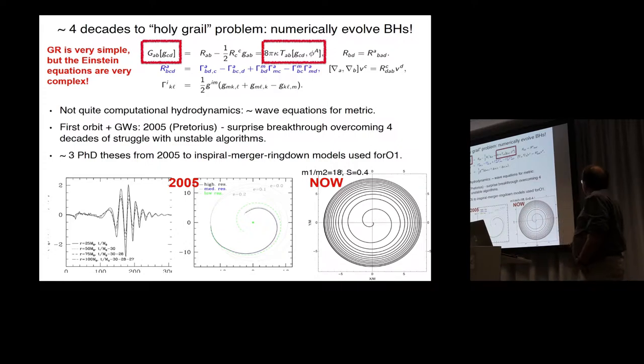The Einstein equations, if you write them as tensors, they're quite easy to write. One tensor is equal to some other tensor. But if you write this out in coordinates explicitly, it gets very complicated. You get hundreds of terms. You have a large degree of complexity. The first time basically like three-quarters of an orbit and the gravitational wave signal could be calculated was in a breakthrough work in 2005. This is what we can do a bit more than ten years later. This cost about a million core hours a few years ago. And you see that we basically just had about ten years from the first simulation to reasonably mature models. So this is basically just three PhD theses to develop this field.